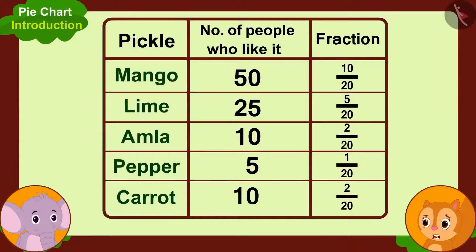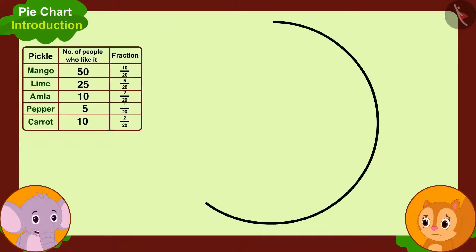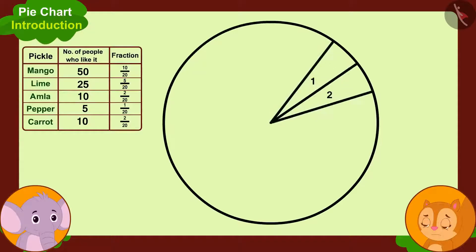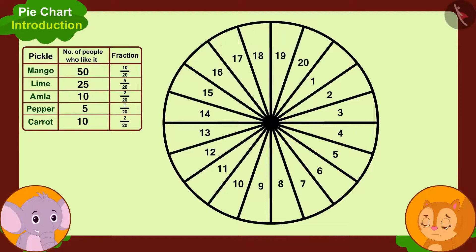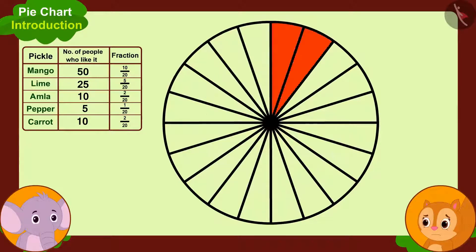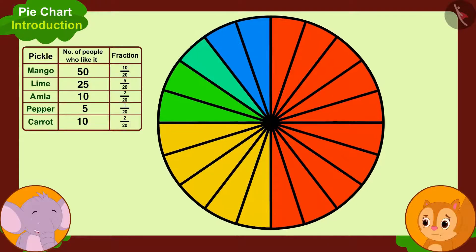Chanda points out, 'But Appu, you haven't made any pie till now.' Appu replies, 'Don't worry. Now we are going to make the pie of the pie chart. We will make a circle, then divide this circle into 20 equal parts, and finally we will color these parts of the pie chart as per the fractions and illustrate it using the circle.'